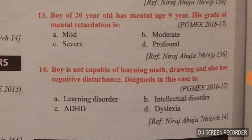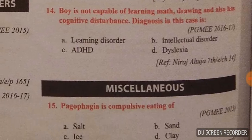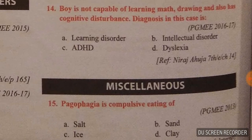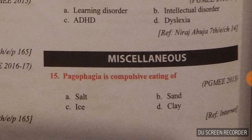Question number thirteen: a boy of 20 years old has a mental age of 9 years. His grade of mental retardation is moderate, option B is the right answer. Question number fourteen: a boy is not capable of learning maths or drawing and also has cognitive disturbance. The diagnosis in this case is learning disorder, option A is the right answer.